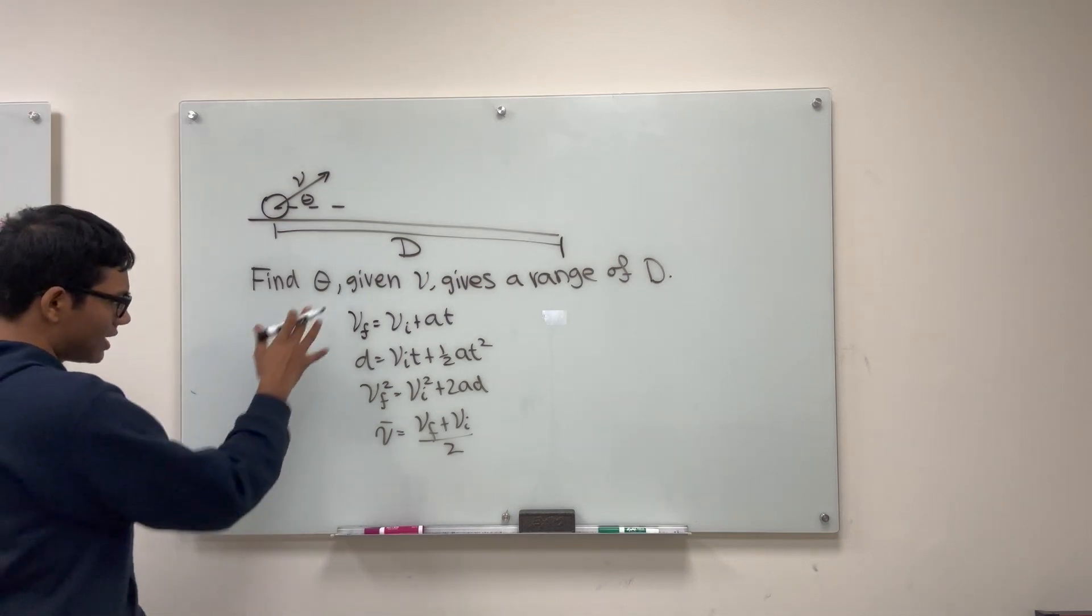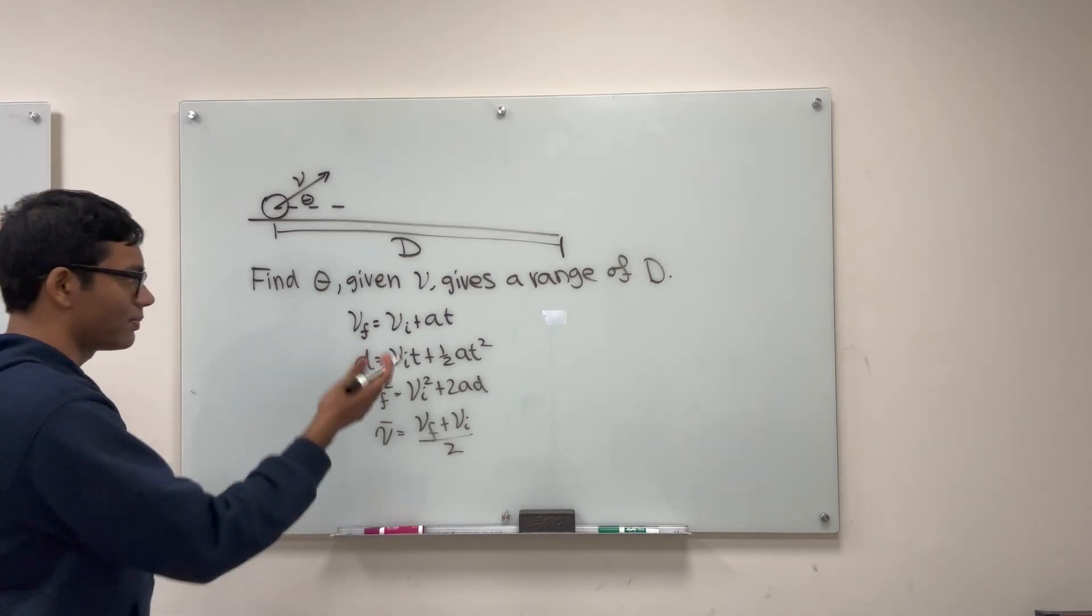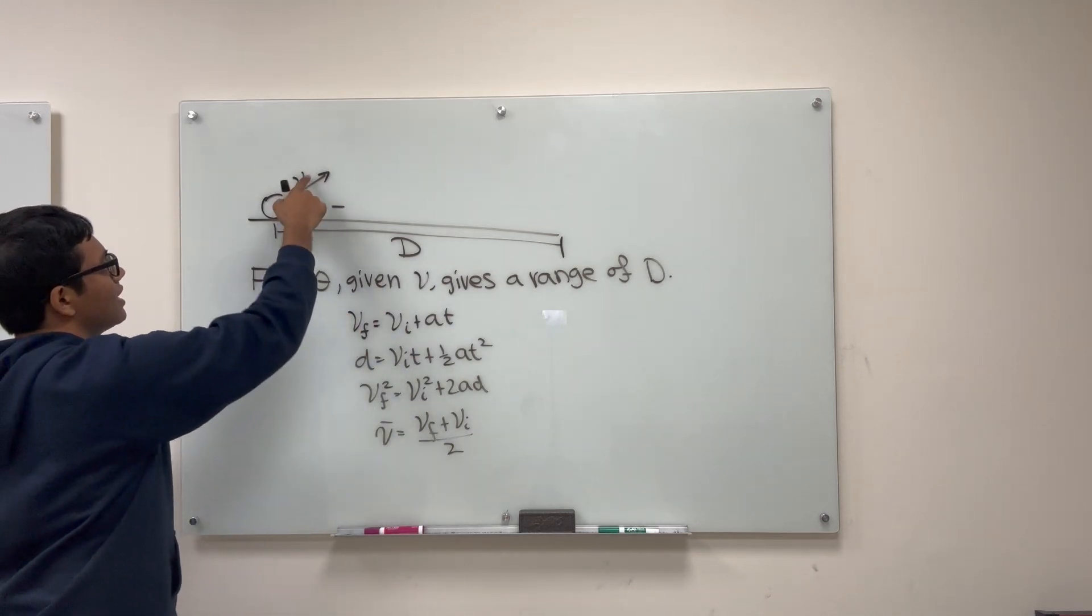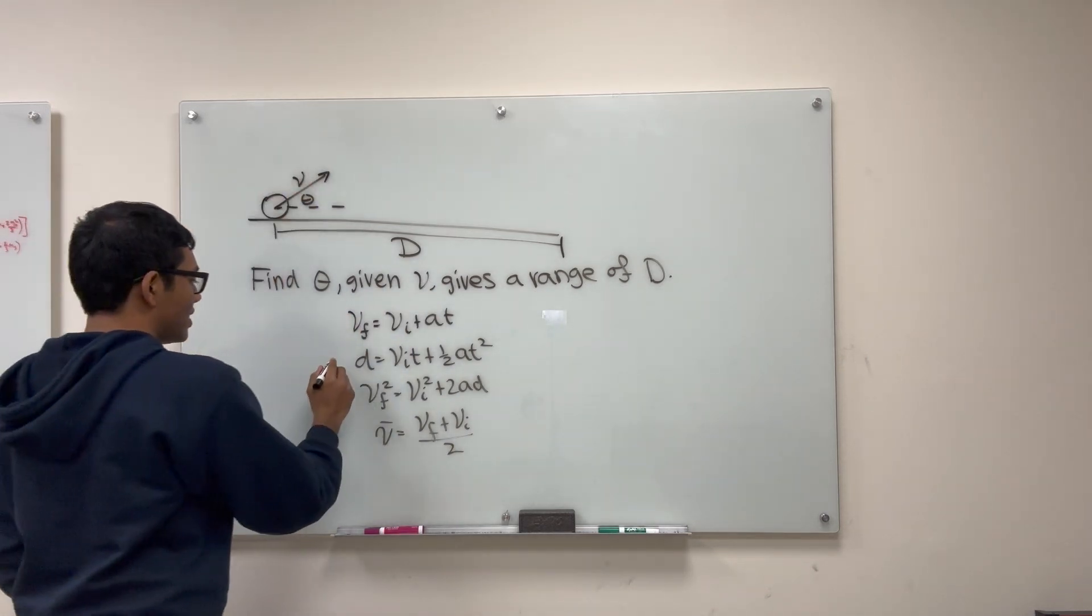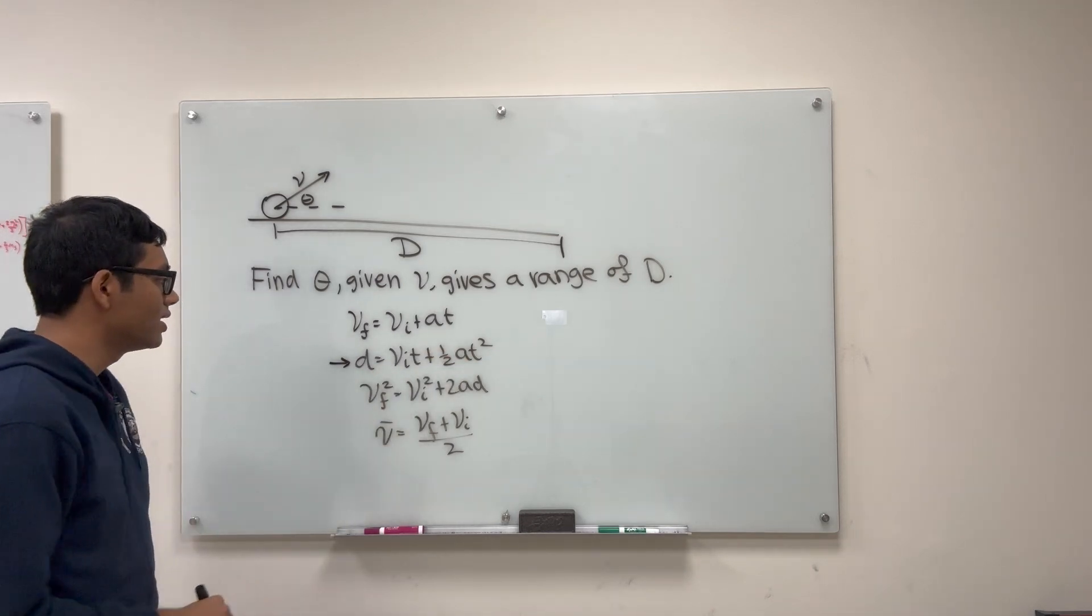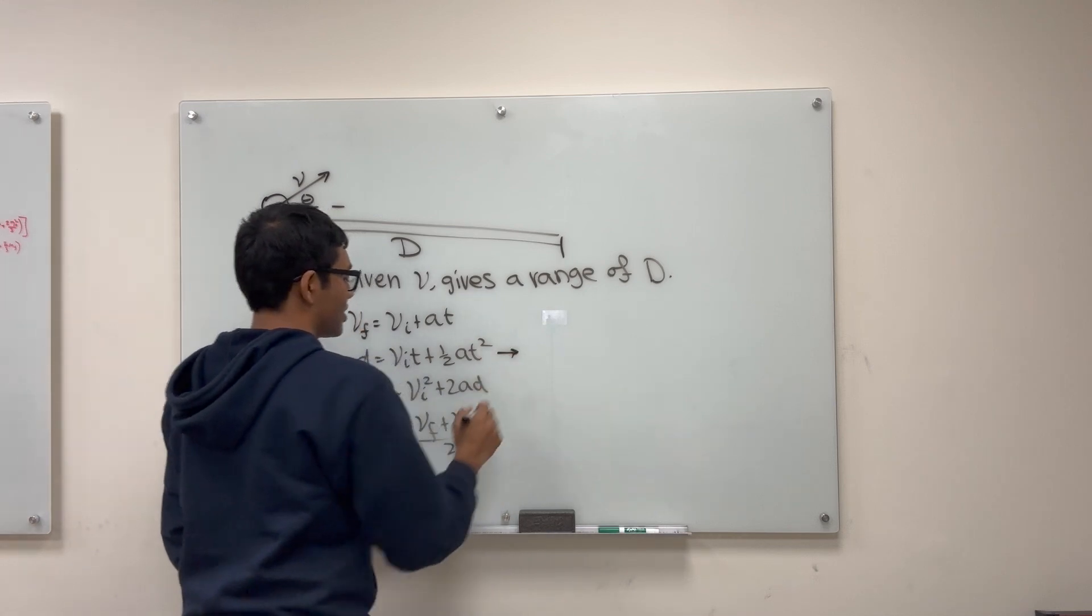So if we look at these four equations, which one is going to help us find the range most directly in terms of the angle theta and the initial velocity v? Well, we can start with this range equation, d is vit plus half at squared. Let's apply this equation to the x direction.